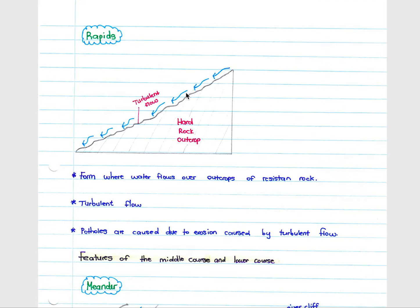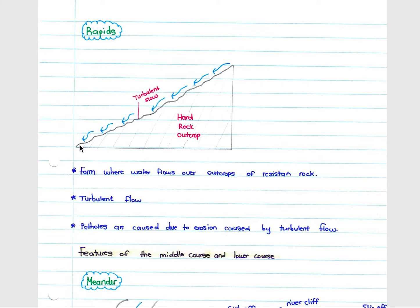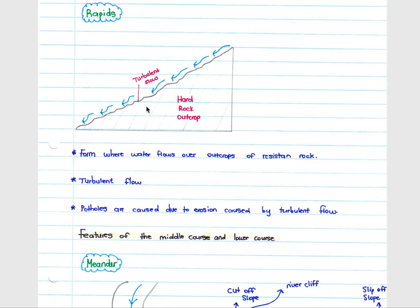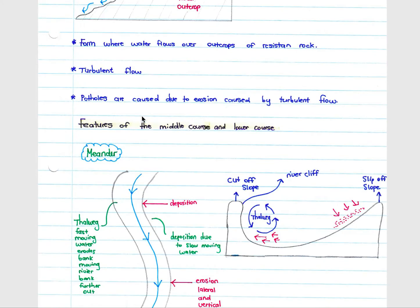Rapids form where water flows over outcrops of resistant rock on the riverbed which are often uneven. The turbulent flow — the vertical movement of water — creates eddies and bubbles, and potholes are caused by erosion from this turbulent flow.